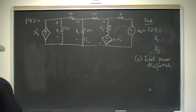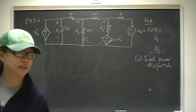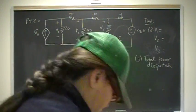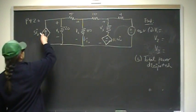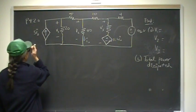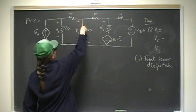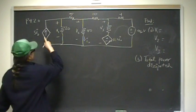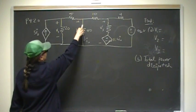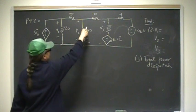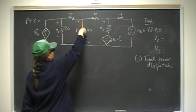This is problem 20 for chapter 4, and we have the following circuit. We have a current dependent source with a value of 5 times I₀. This is your I₀ — it's the current through the 40 ohm resistor. It's connected to 20 ohms, which is connected to 5 ohms and 40 ohms here. The branch current through this is called I₀.